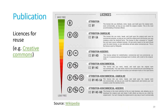Now about publication and Creative Commons licenses. When you publish something, you publish it with a license that tells users what they can do with the data. Here they are arranged from the most free to the least free.